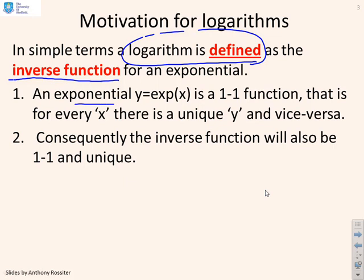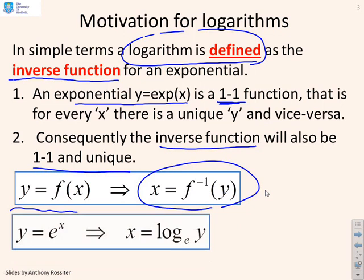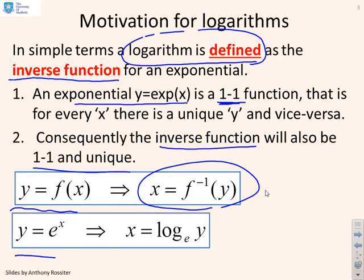Now because an exponential, y equals e to the x, is a one-to-one function — that is, for every x there's a unique y and vice versa — then consequently the inverse function must also be one-to-one and unique. So this is how we do inverse functions. You could write y equals f of x, then the inverse function would be written as x equals f to the minus one of y. In terms of exponentials and logs specifically, we could write y equals e to the x and x equals log_e y. So those are two sides of the same coin.